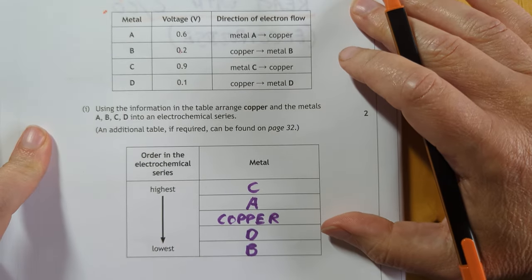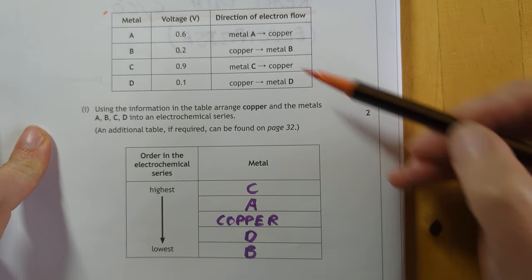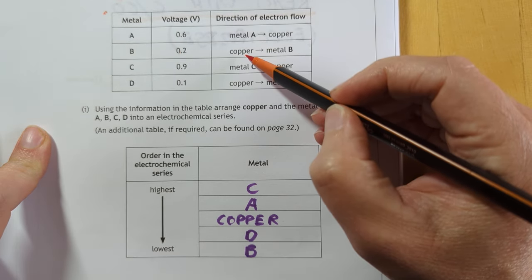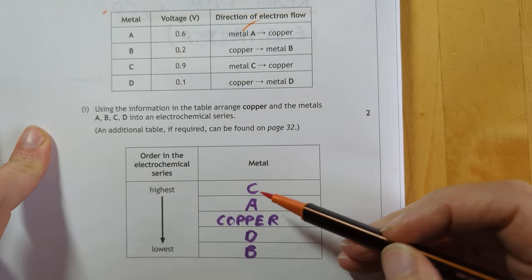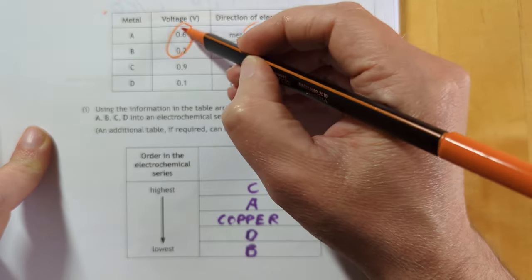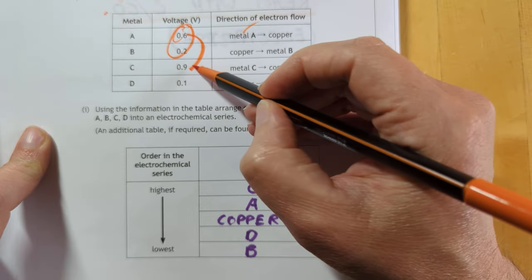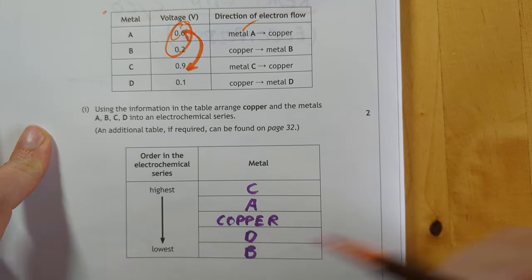This is a nice problem-solving one in which we have to order these metals compared to copper. Two of them will be above copper, shown by the direction of electron flow, and two of them will be below. To sort them out, you need to look at the size of the voltage that you have produced. Sorry, not comparing that with that, comparing that with that. So C is furthest away, then A, then copper, then D, then B.